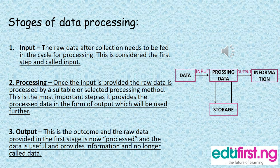We have stages of data processing. The first stage is the input stage. The raw data, after collection, needs to be fed into the cycle for processing. This is considered the first step and is called the input. You collect them, you prepare them, then they need to be fed into this cycle for processing.